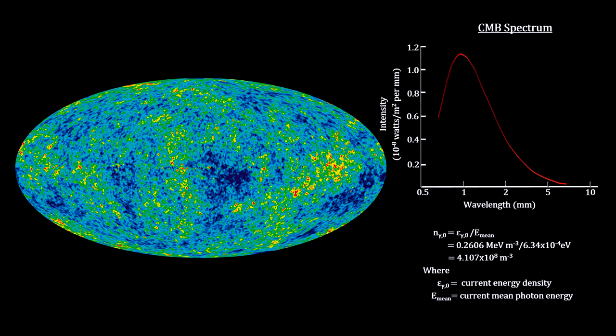The blackbody radiation formula also gives us the number density of CMB photons. There are over 400 million of them in every cubic meter of space throughout the cosmos — a thousand times more than all the photons from all the starlight ever created by all the stars and all the galaxies for all the billions of years the stars have been shining.